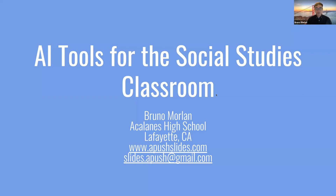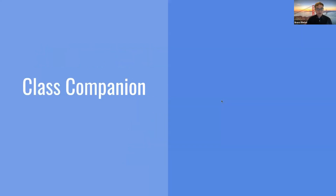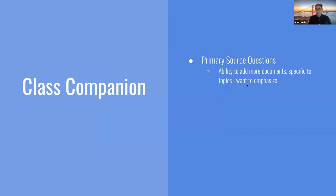When I started working with Avery, all I did was put all of the primary source documents I was already using in class into Class Companion. And when she launched, now I'm able to do so even without having to go through her. My experience with Class Companion has been mostly to use the primary source questions. The reason I like it is because I'm able to add more documents that are specific to the topics I want to emphasize — and there are documents that sometimes aren't even mentioned in some of the AP textbooks, as I'll show you in a second.